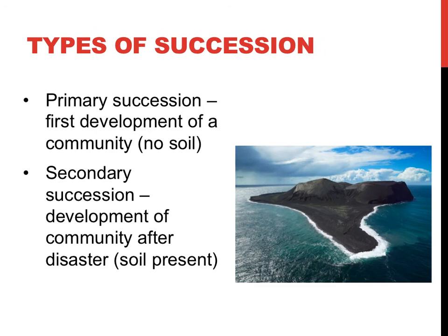There are two types of succession, determined by whether or not an area has possessed life and or contained soil. Primary succession is the primary, or initial, time that a location has contained living organisms. If a volcanic island is newly formed in an area, for example, no life would have lived there before, and no soil would be present. Primary succession would be exhibited in the volcanic island picture to the right.